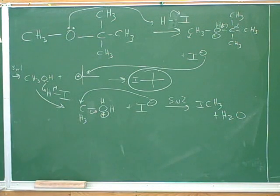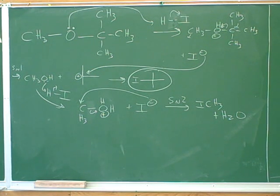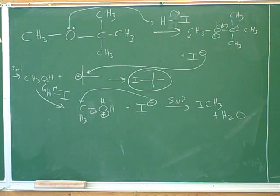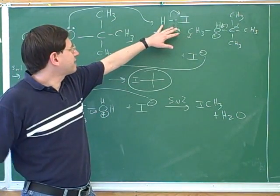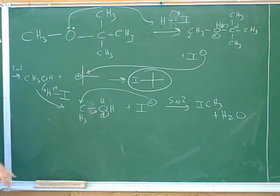One important lesson is recognizing that similar atoms can give you two different paths. For example, the Williamson ether synthesis involves an SN2 reaction, but you can't do it if you have too much steric hindrance — then you get E2 instead of SN2. The same applies here: when a hydrohalic acid attacks an ether, it can go through either an SN2 or an SN1 path, so you always have to ask what's the right path to use.